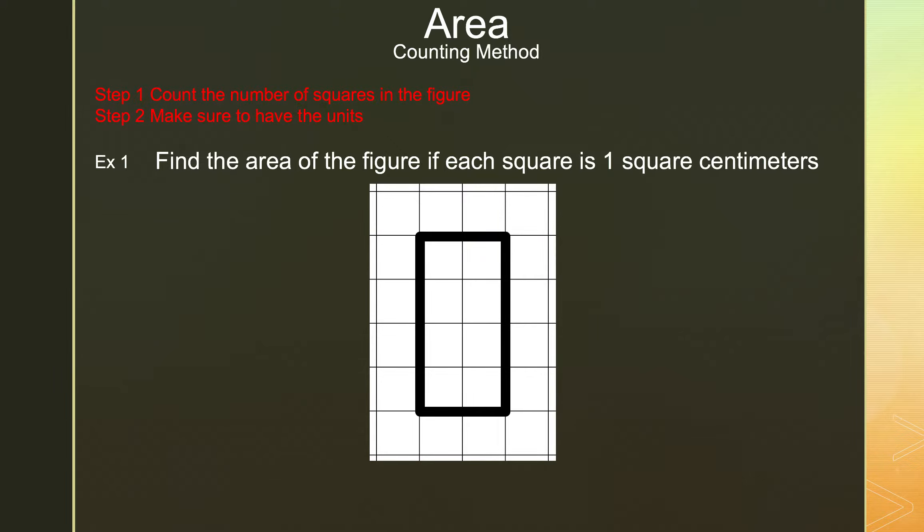Example 1: Find the area of the figure if each square is one square centimeter. That just means the length and the width is one. Now we're going to count the squares inside the figure: one, two, three, four, five, six, seven, and eight. Now we need to write our units in the answer, which is eight square centimeters or eight centimeters squared.